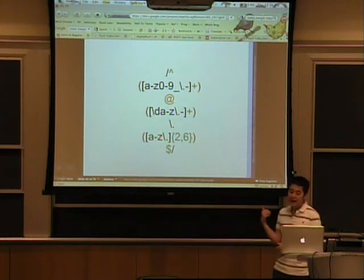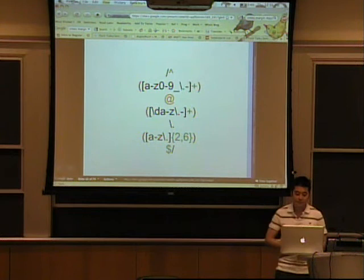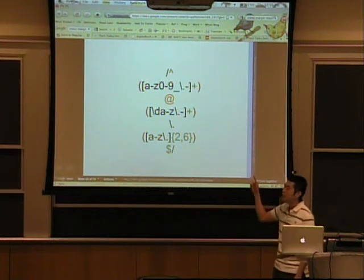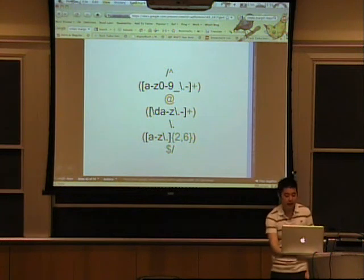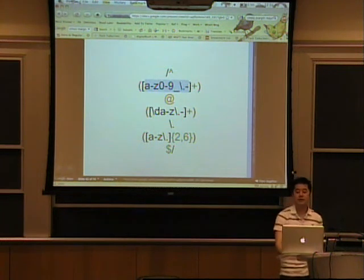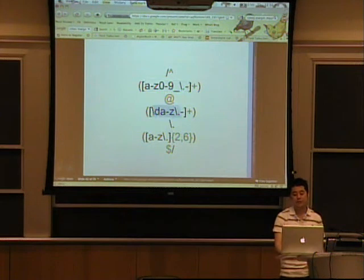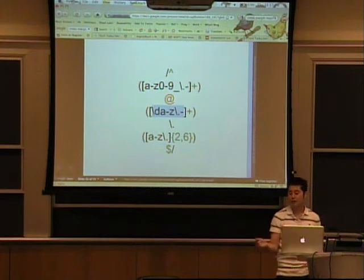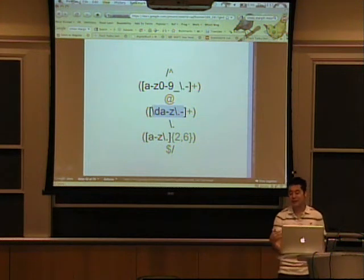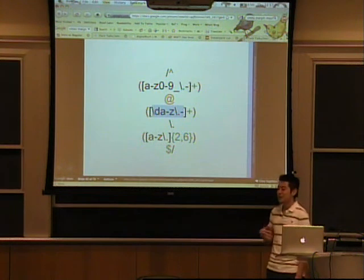We split by the @ and the groups, and we see that it has like alphanumeric characters, underscores, periods, and dashes. And then we have some digits and alphanumeric characters, and then it ends in either a letter or a period.